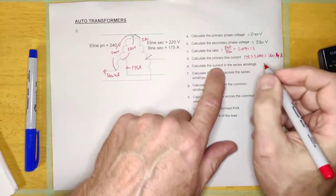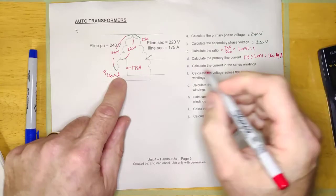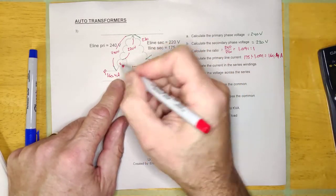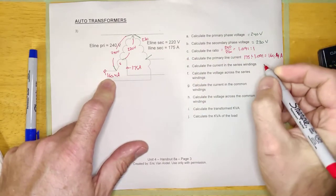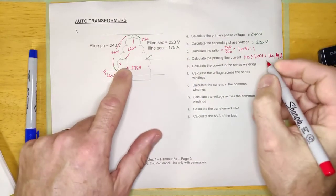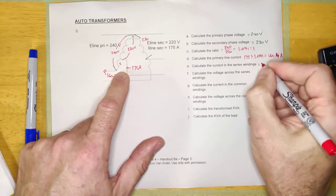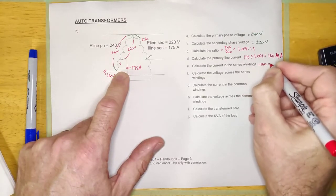Calculate the current in the series winding. There's the series winding right there, that little guy, one bump. It has to be equal to the primary current because it always will be. It's always out here in series with the primary, so this is just 160.4 amps.